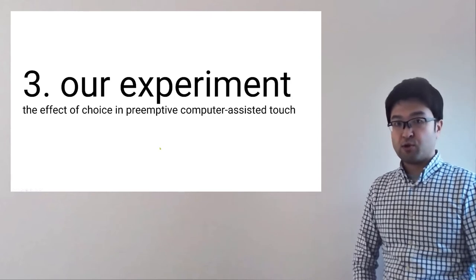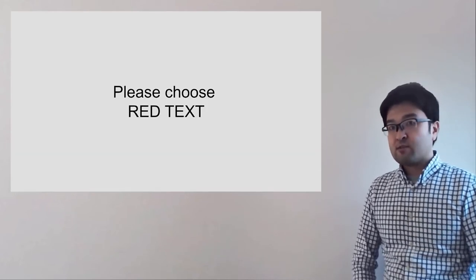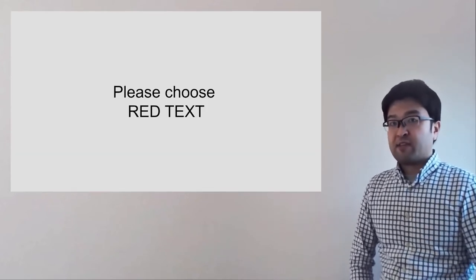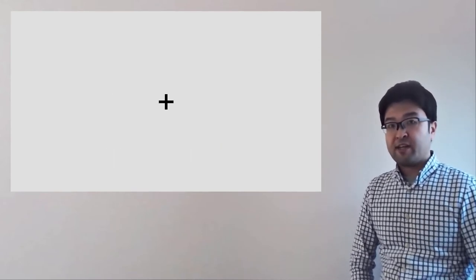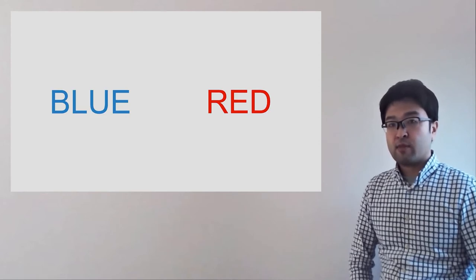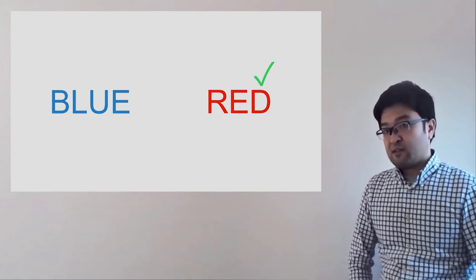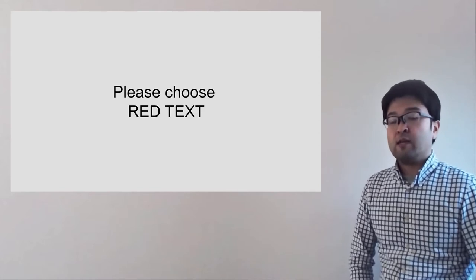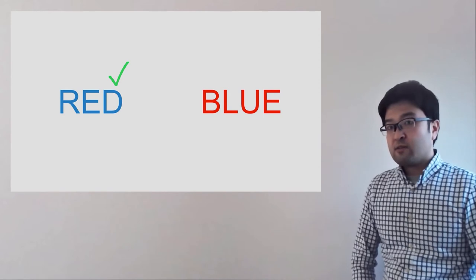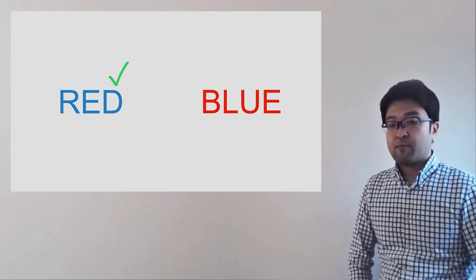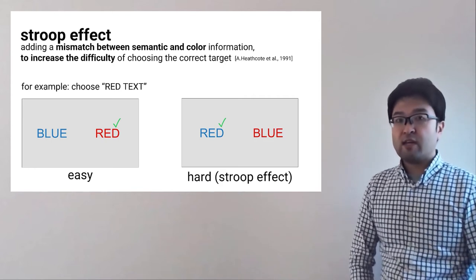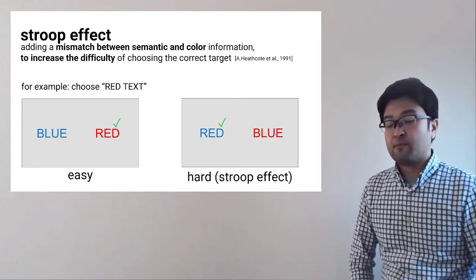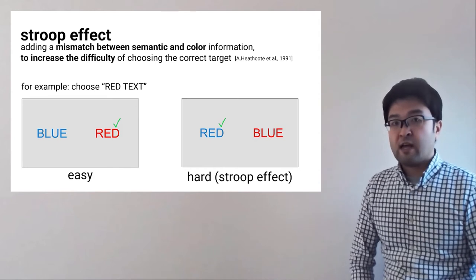I'll explain what we did. At first, the choice task we used. Let's try. Your task is to choose the red text, sometimes red, sometimes blue color. Ready, set, go. Right is the answer. How about this? Ready, set, go. Left is the answer. I guess it takes a little bit of time. This is the Stroop effect. Mismatch between the semantic and color information increases the difficulty to find the target. We use this as a choice task.